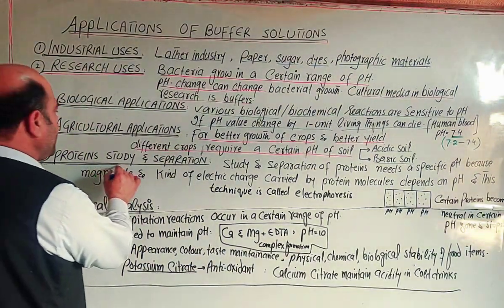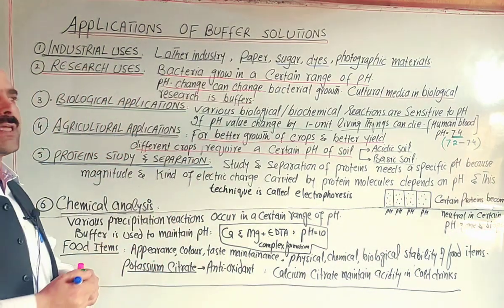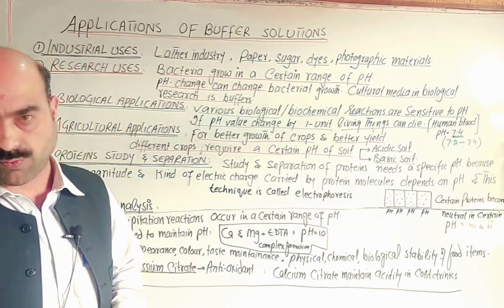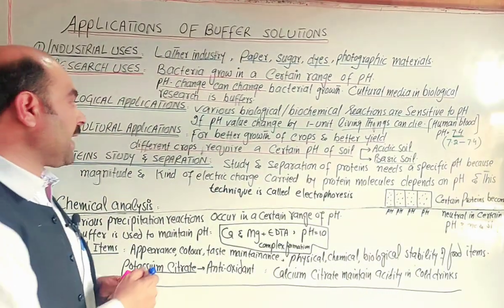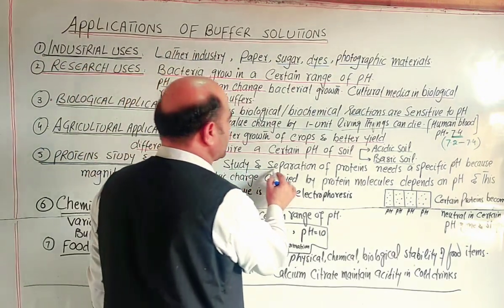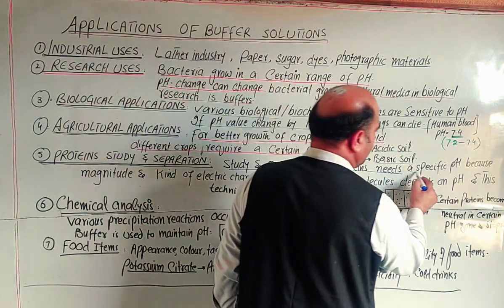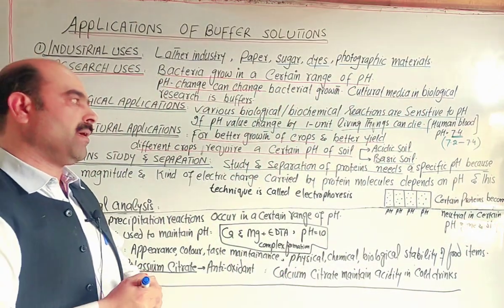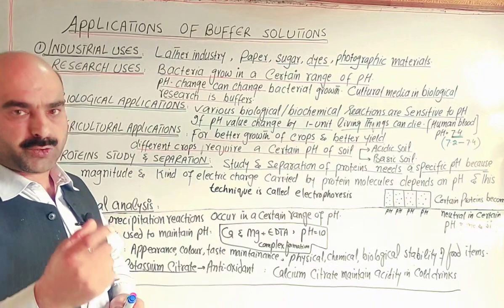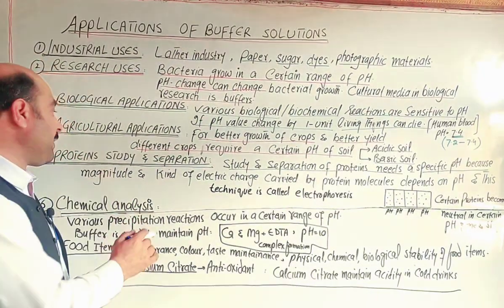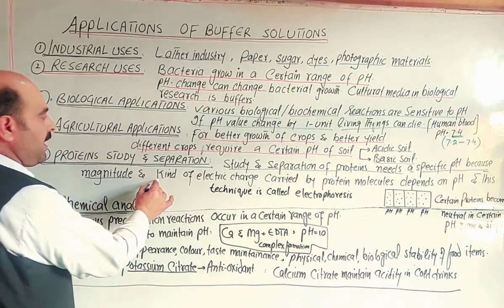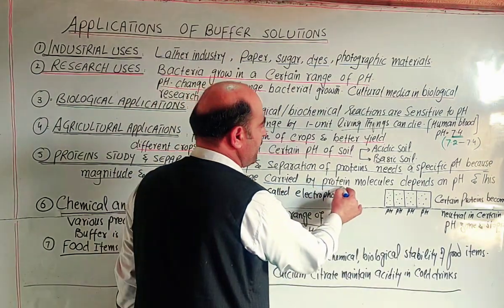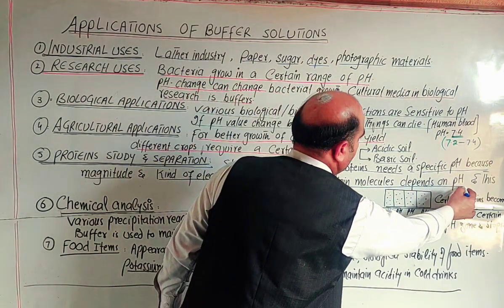Next is protein study and separation. Different kinds of proteins are studied — their structure is studied and they are separated. For this, buffers are used. The study and separation of proteins needs a specified, specific pH. Protein analysis requires a specific pH to work properly.